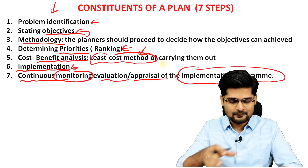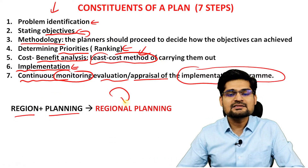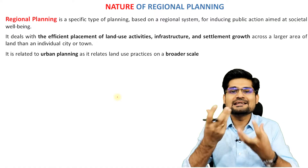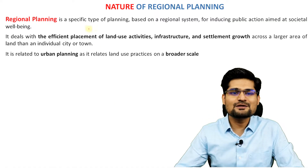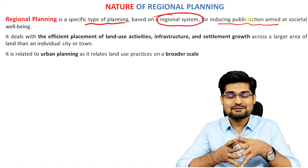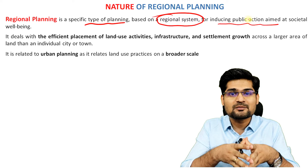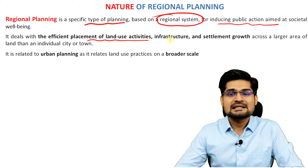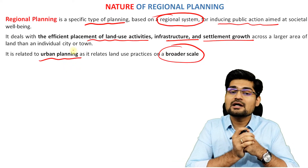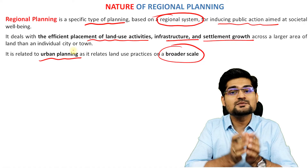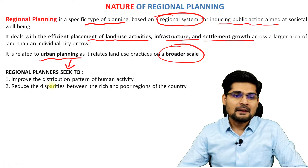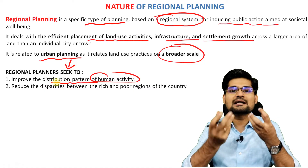Region plus planning gives us the concept of regional planning. Regional planning is a specific type of planning based on a regional system for inducing public action aimed at the well-being of society. It is the efficient placement of land use activities, infrastructure, and settlement growth. The scale of planning varies — urban planning addresses an urban area, and the scale ranges between rural and urban.